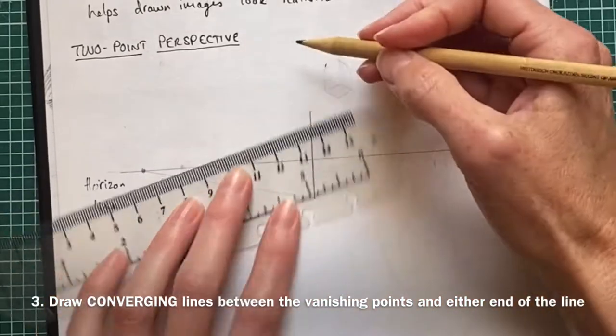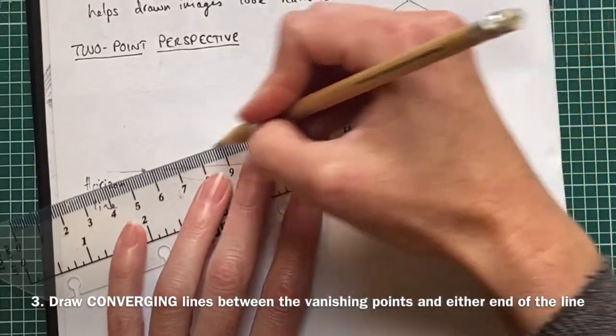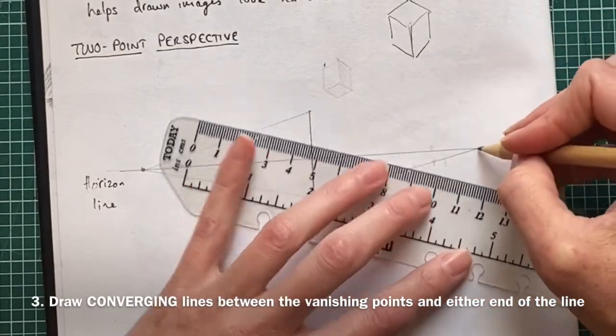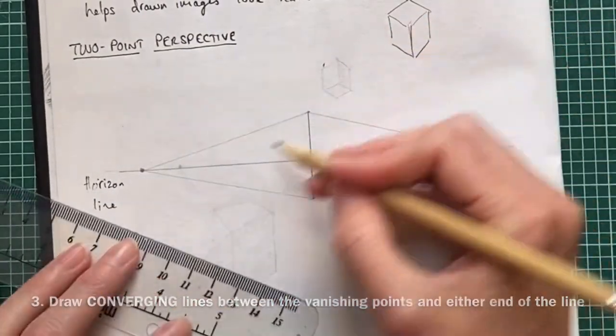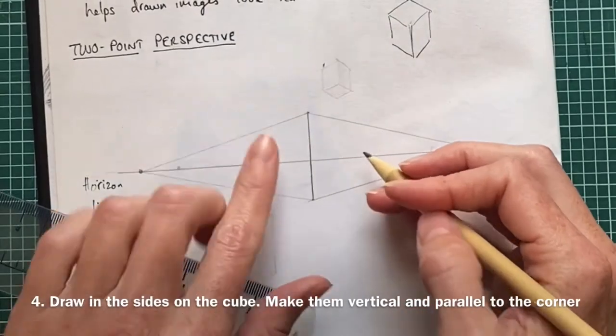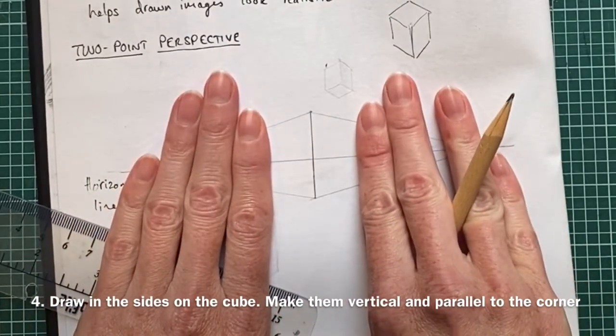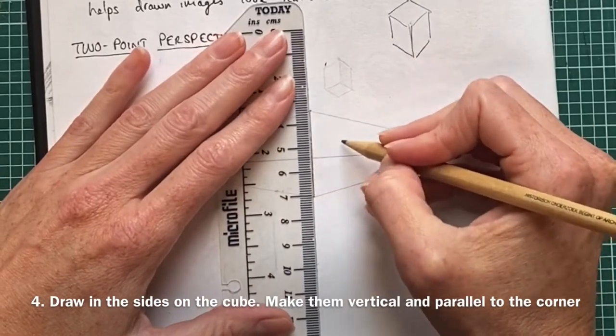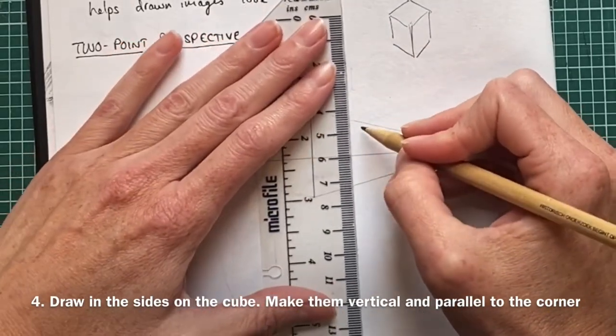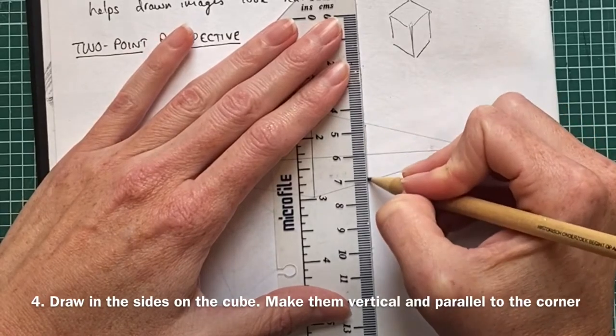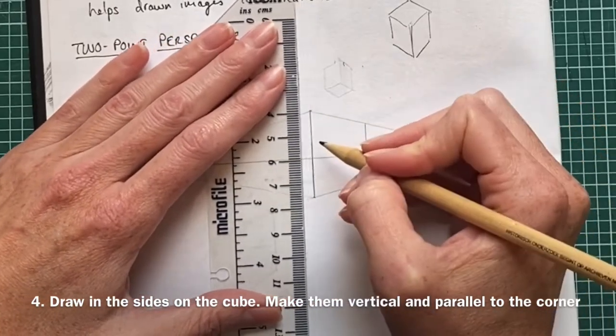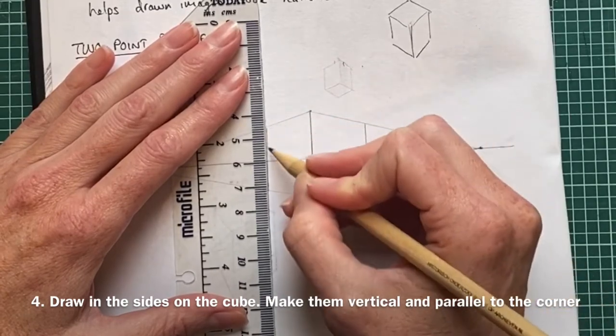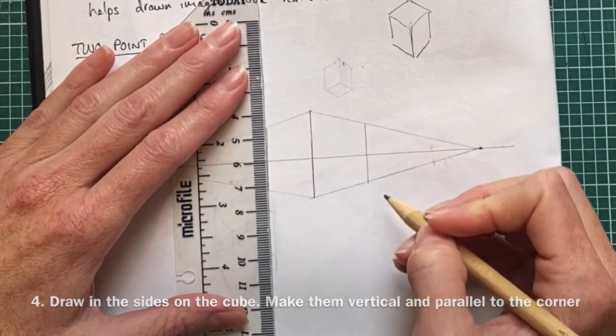Now I want to draw the two sides of the cube, so I'll do that with parallel lines, parallel to this vertical line. I'll use my ruler to guide me there, and same here, keeping it parallel, meaning exactly equal to that vertical line, and spacing appropriately.